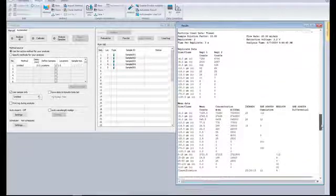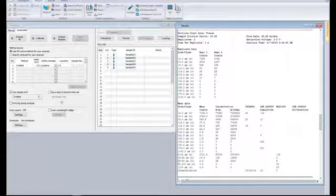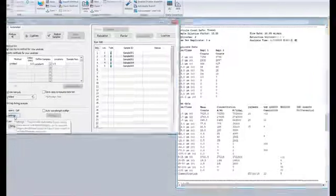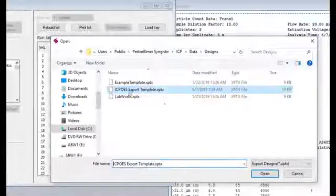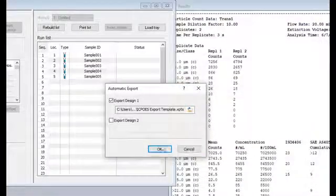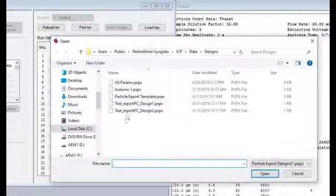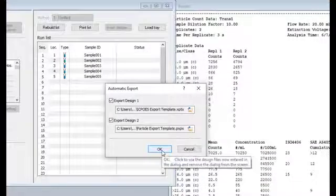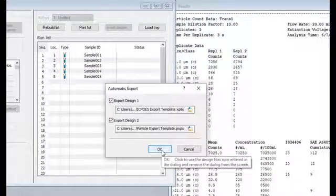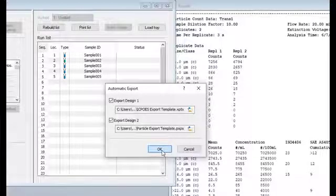And at the end of the sequence, the results will be exported per the templates in the auto export selections. Auto export has one place for each analysis type, ICP and particle counting templates. For those customers with specific formatting needs, a specialized template can be created in the data manager export wizard, and then selected for auto export.